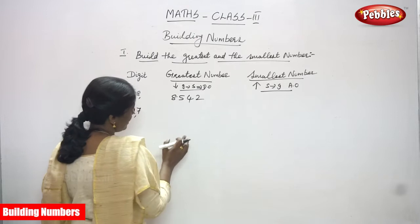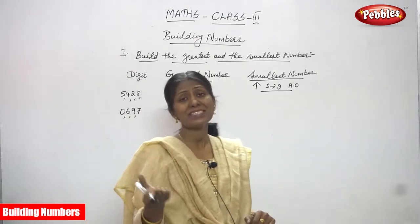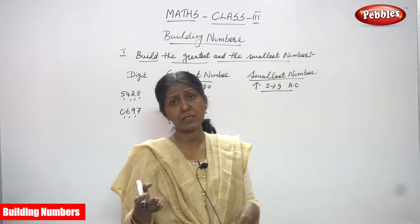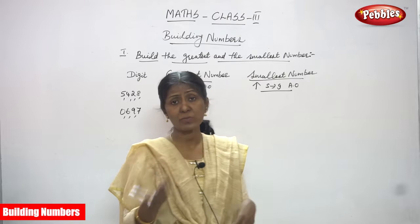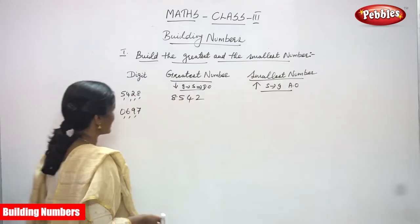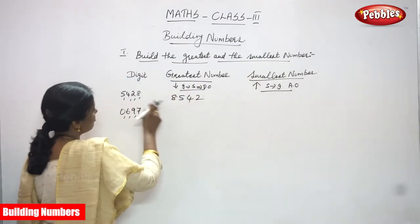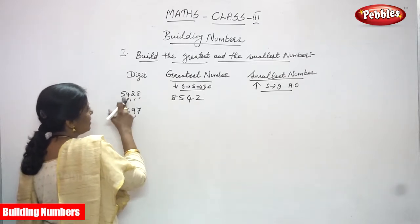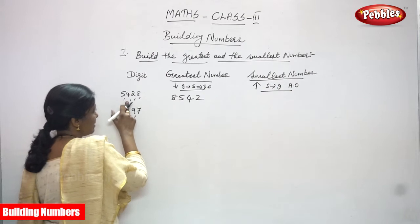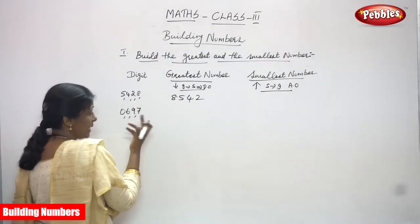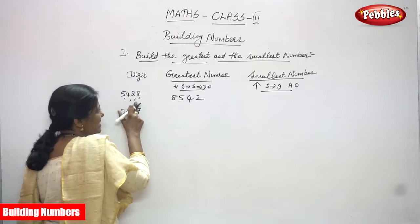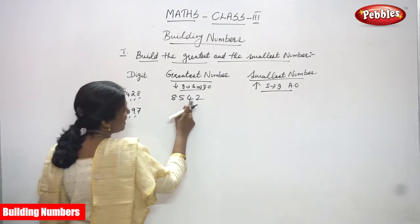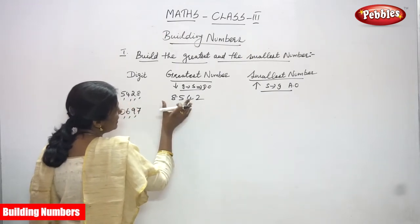Greatest number means we arrange all numbers in decreasing order — start with the greatest to smallest. To build the greatest number, first find the biggest number, then the next greater, then the second greater, and the last is the least number, the smallest. The answer is 8,542. This is the greatest number.